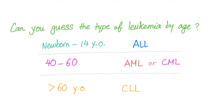Which leukemia is most common? The answer is ALL. You can roughly guess the type of leukemia by age: newborn to 14 years old — ALL; age 40 to 60 — AML or CML; more than 60 years old — CLL.